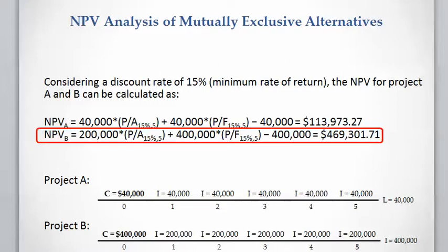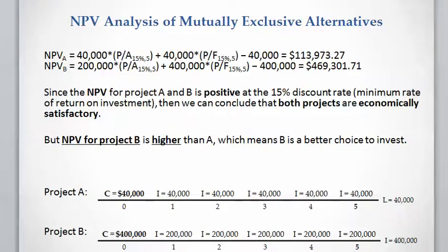Next, we calculate the NPV for Project B at the minimum rate of return of 15%, which is also positive, so Project B is also economically satisfactory. Since both projects have positive NPVs, both are economically satisfactory. However, because Project B has a higher NPV, we conclude that Project B is the better project to invest in.